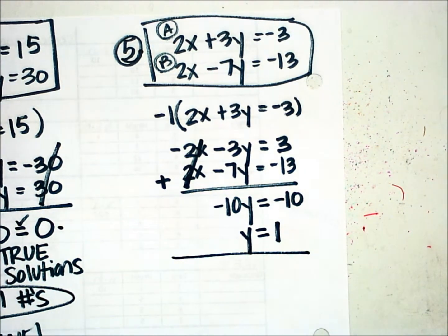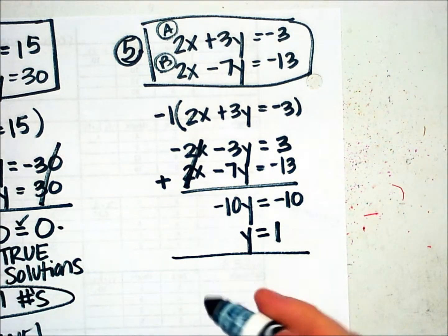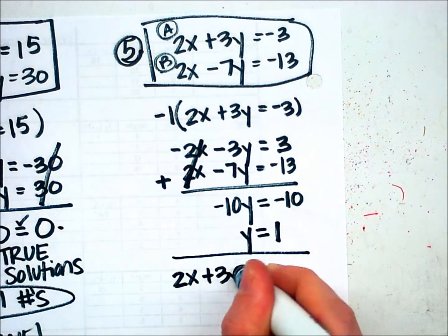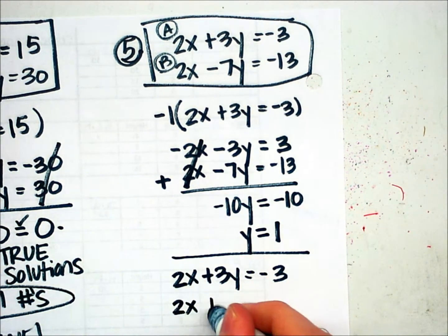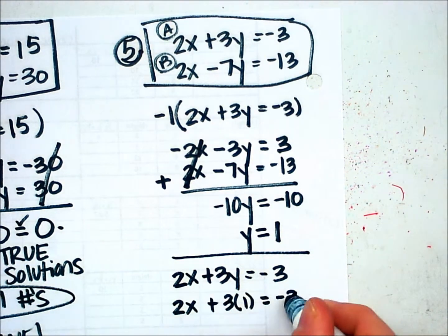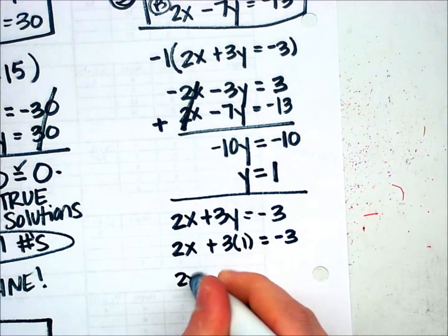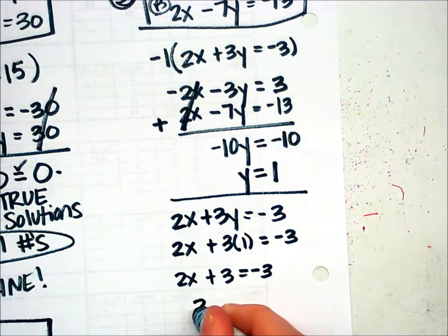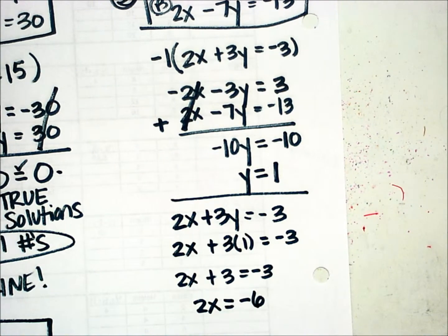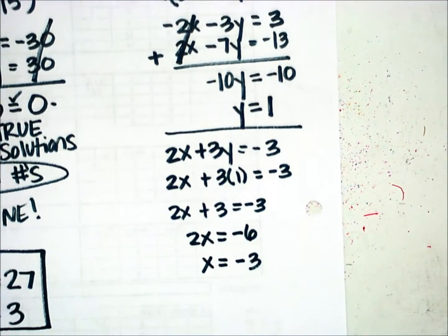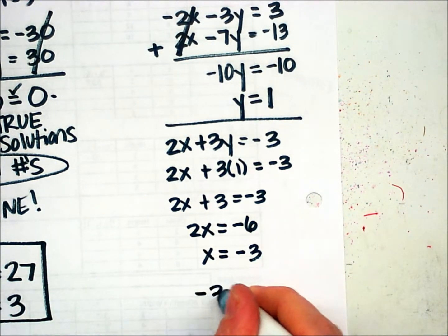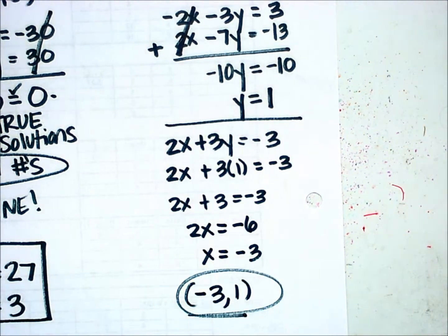Now I substitute 1 in place of y in one of the original equations — I'll use the original equation A. So 2x plus 3 times 1 equals negative 3. That gives 2x plus 3 equals negative 3, so 2x equals negative 6, which means x equals negative 3. My solution is the ordered pair negative 3, 1. Remember, when writing ordered pairs, you always give the x-coordinate first, then the y-coordinate: negative 3, 1.